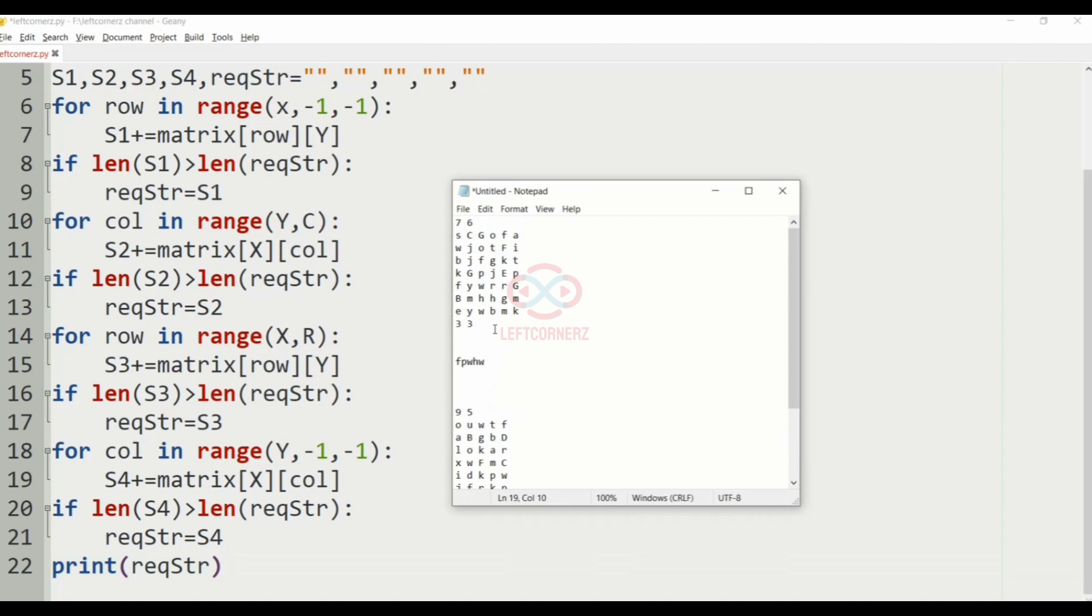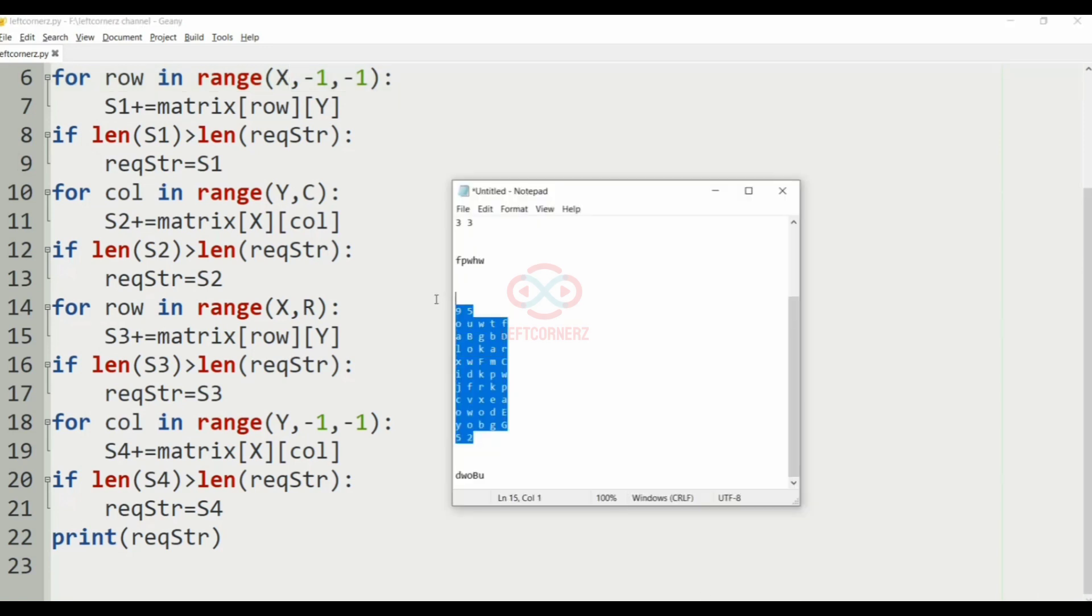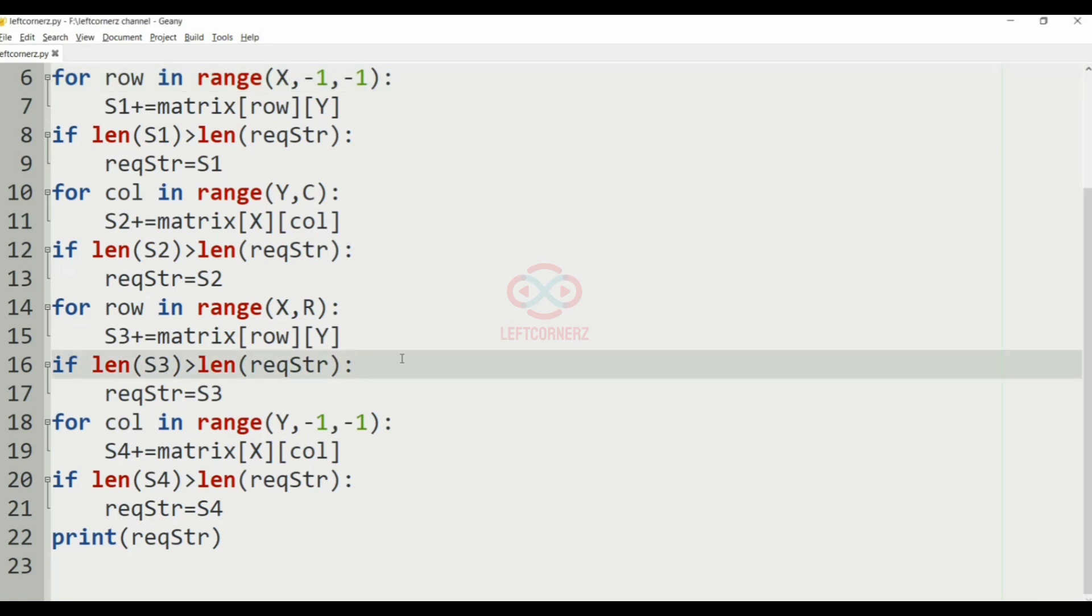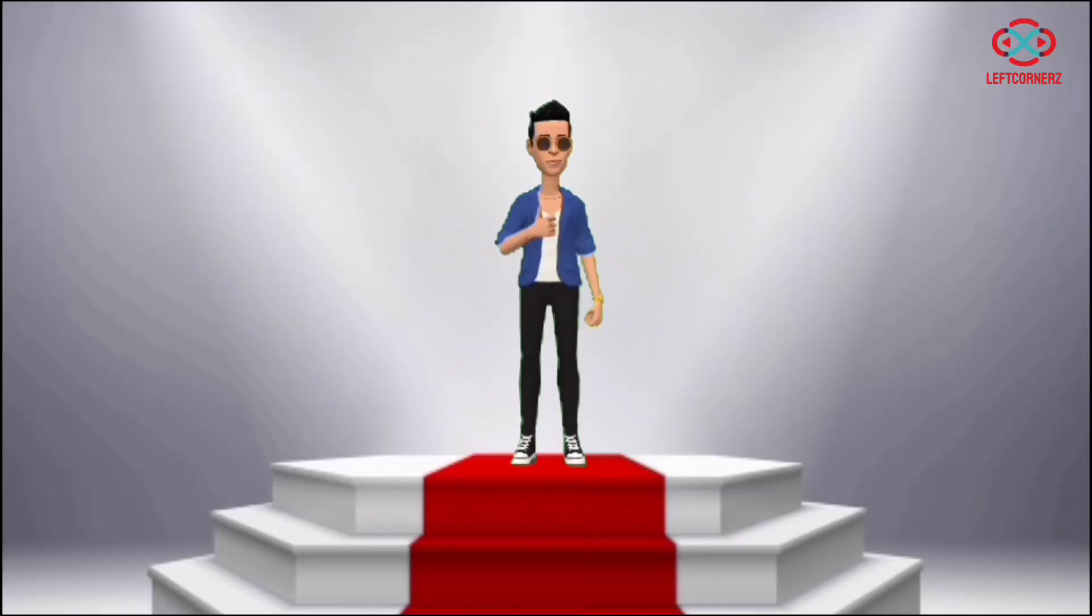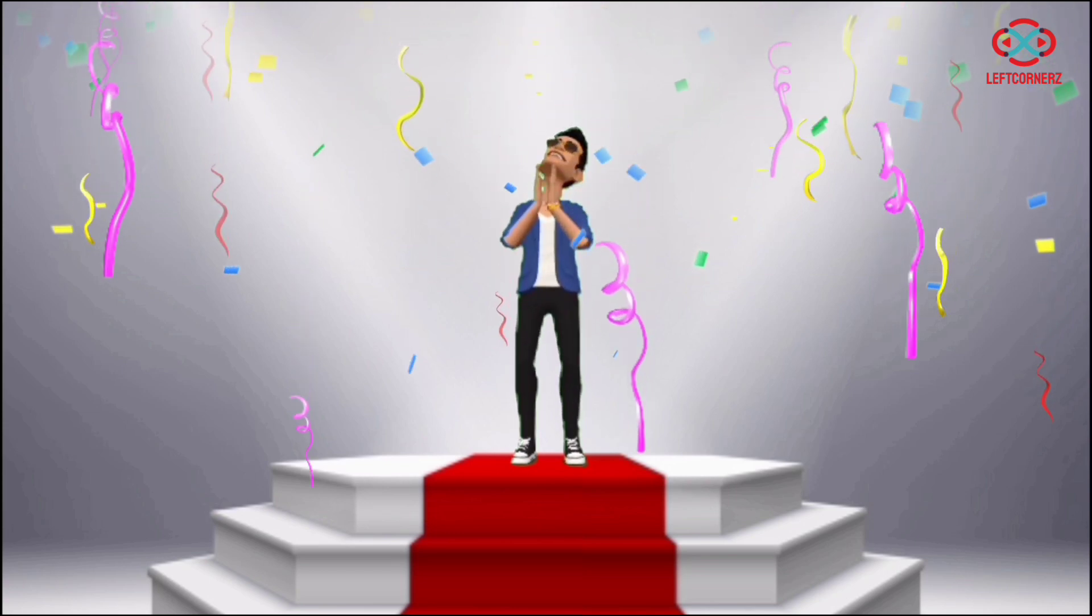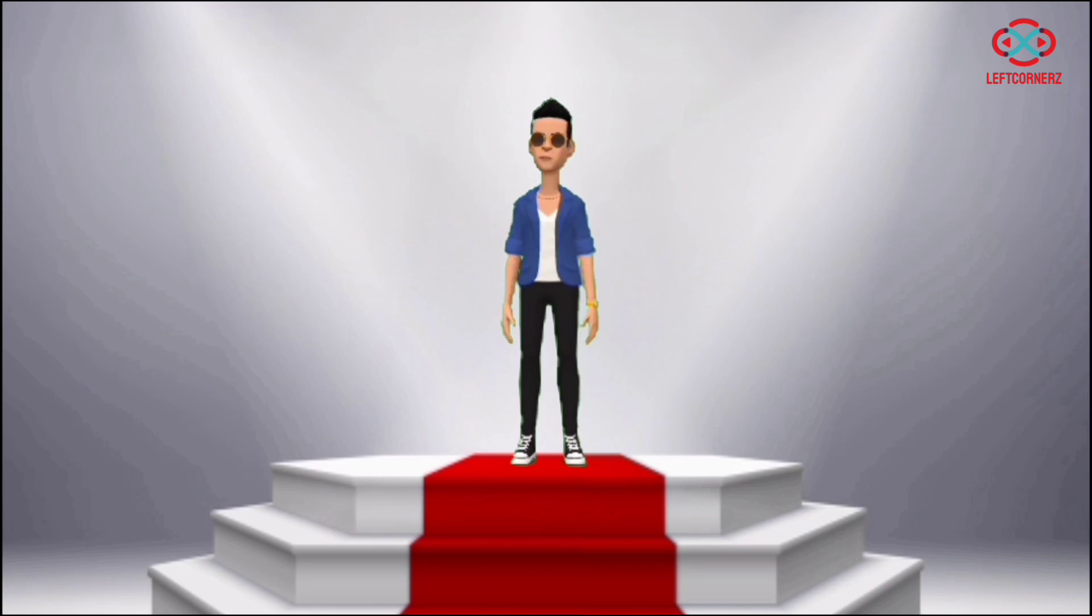Now let us execute our program. We'll pass our first test case. So yes, we have got the correct output. Now we'll pass our second test case. So here also we've got the correct output. Our program has passed all our given test cases successfully. Hope you guys understand, thanks for watching, see you next video.